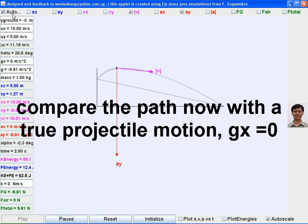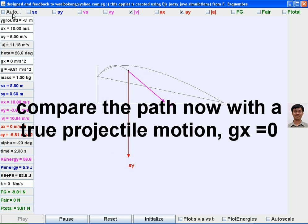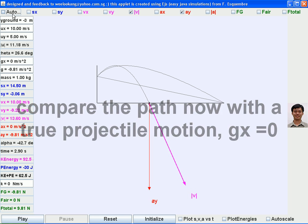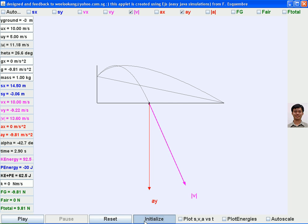Now we change the yx to 0. You can see that this is the true projectile motion in an air resistance-less environment.